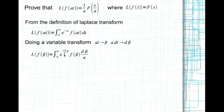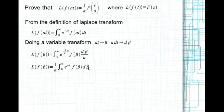After substitution, the integral now looks like a Laplace transform. Let s/a be called s-hat and bring the factor 1/a outside. The limits of integration remain the same. This expression is then capital F of s-hat. Replacing s-hat back with s/a gives us (1/a) times F(s/a), which completes the proof.